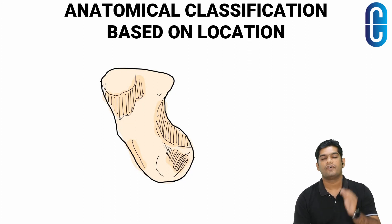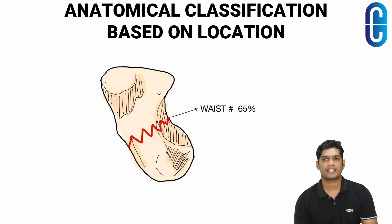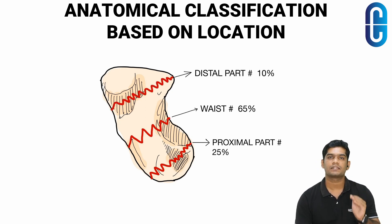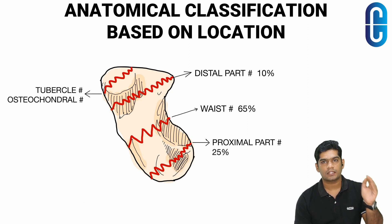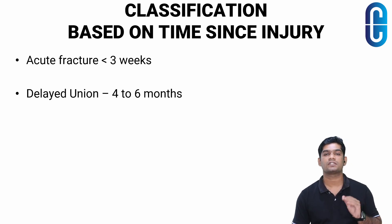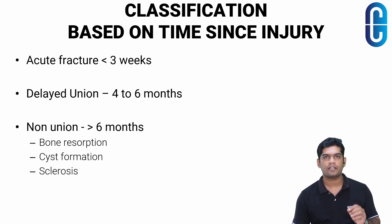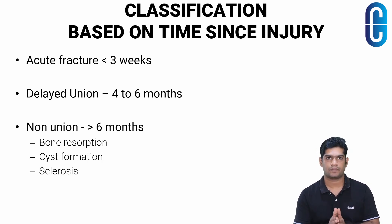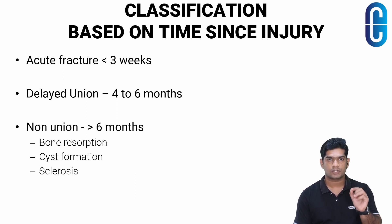For classification, the anatomical classification is based on the location of the fracture line: 65% of fractures occur through the mid portion of the waist, 25% through the proximal part, and 10% in the distal part. There are also tubercle fractures and distal articular surface or osteochondral fractures. Based on time since injury: acute fracture is less than three weeks old, delayed union is when the fracture has not united in four to six months, and non-union is when there is no union even after six months. Many clinicians diagnose non-union regardless of time if bone resorption, cyst formation, or sclerosis is present.